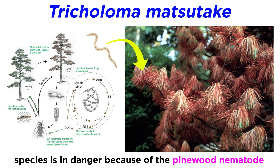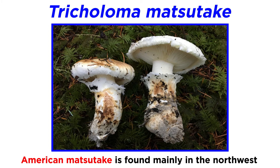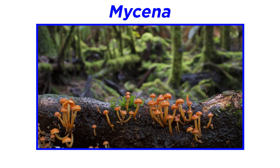Unfortunately, the price will only increase with the mushroom now listed on the red list of threatened species. This decline in Japanese matsutake is due to the infection of Japanese red pine with the pinewood nematode, an invasive worm from North America. Although particularly famous in Asia, there is also an American matsutake found in abundance in the American Northwest, but also found in other northern parts of the United States and Canada. Moving on from the large and aromatic Tricholoma, let us now discuss the small and fragile genus Mycena.